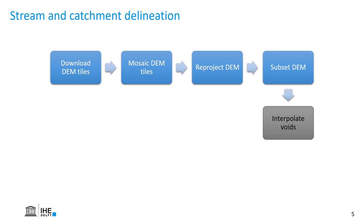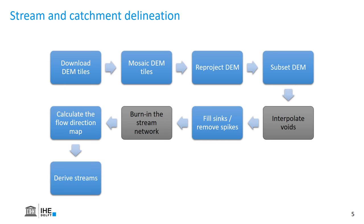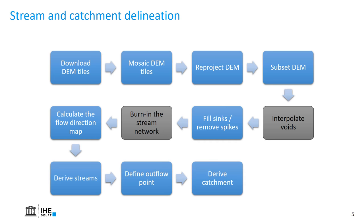Then if necessary interpolate the voids, fill the sinks and remove the spikes, burn in the stream network if we have one available, calculate the flow direction map, derive the streams, define the outlet of the catchment and then derive the catchment. In the end we can convert the dataset to the format that our hydrological model needs.